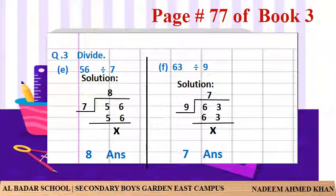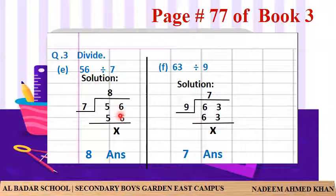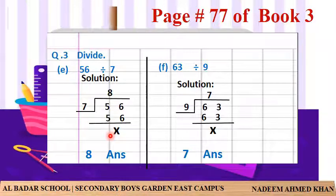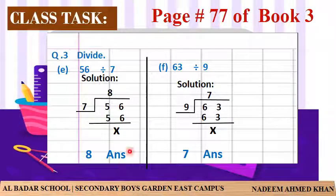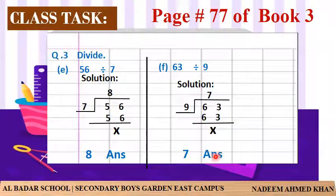E: 56 divided by 7 — 7 باہر لکھا، 56 اندر۔ 7×8=56، minus کریں کچھ نہیں بچا، cross لگا دیا، answer 8۔ F: 63 divided by 9 — divisor باہر، dividend اندر۔ 9×7=63، answer 7 ہے — اسے quotient بھی کہتے ہیں۔